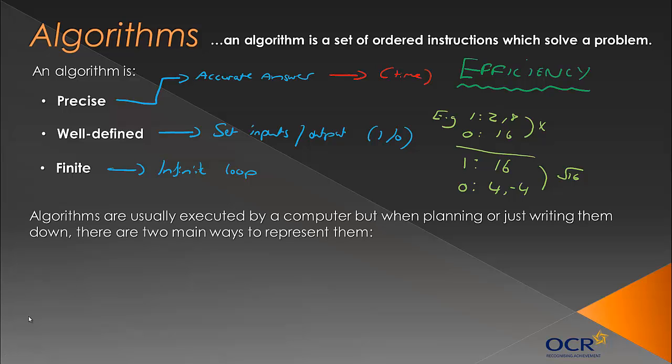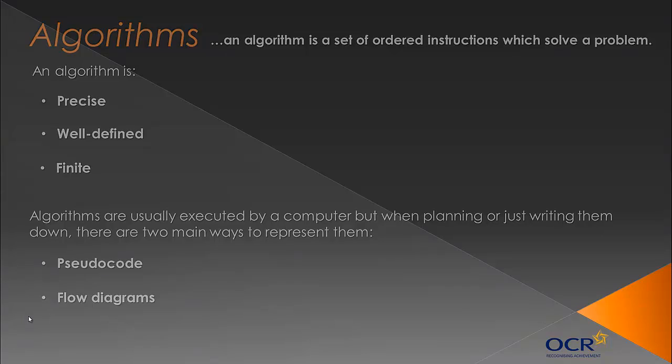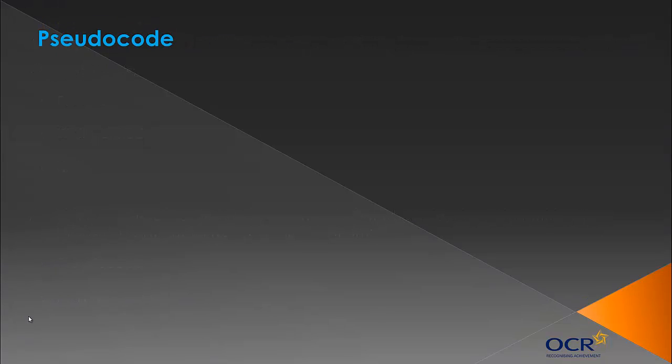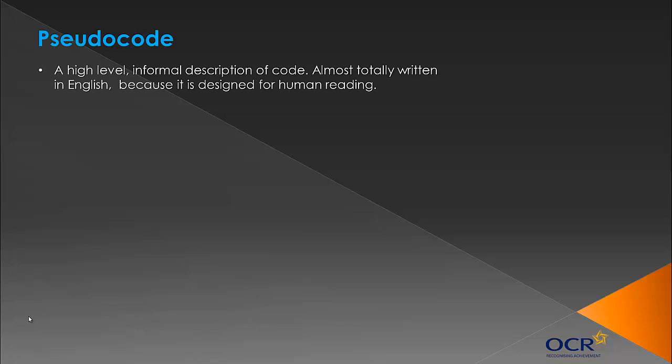Usually algorithms are executed by a computer, but when you're planning them down, we usually show algorithms in two ways: first is pseudocode and the second is flow diagrams or flowcharts, same thing. First of all, let's look at what pseudocode is. It's probably a good time to mention pseudocode. You'll probably use it in your controlled assessments perhaps, or you have the option to. In your exam, they may ask you to express an algorithm in pseudocode or flow diagram or either. So it's up to you which one you use.